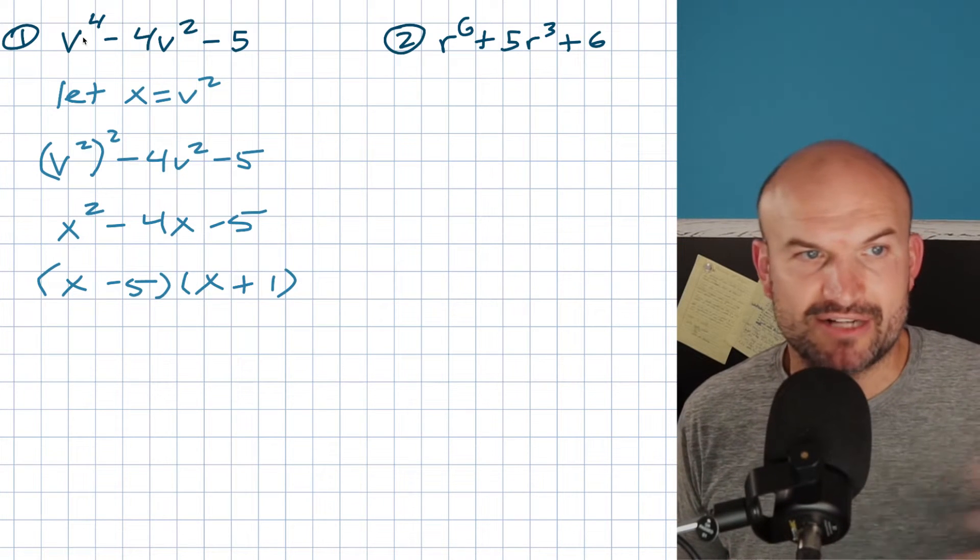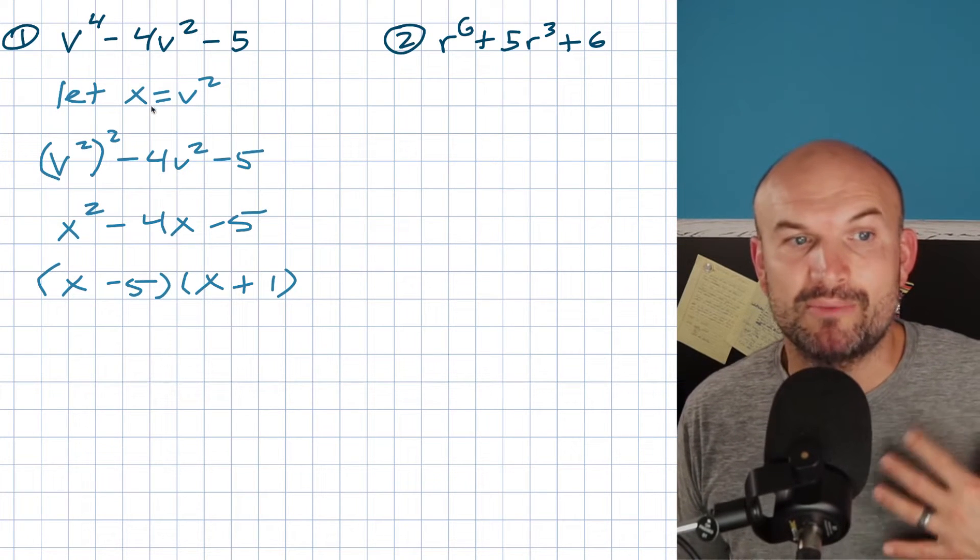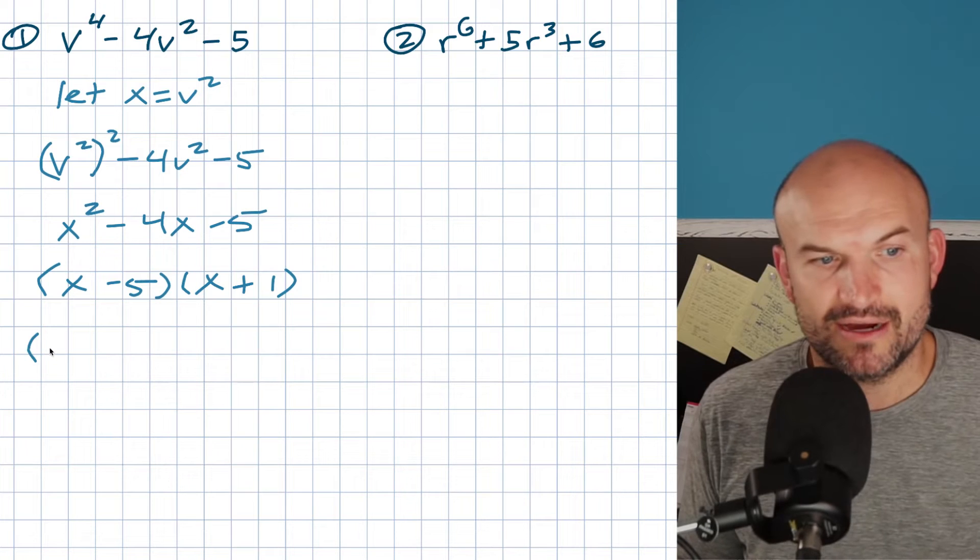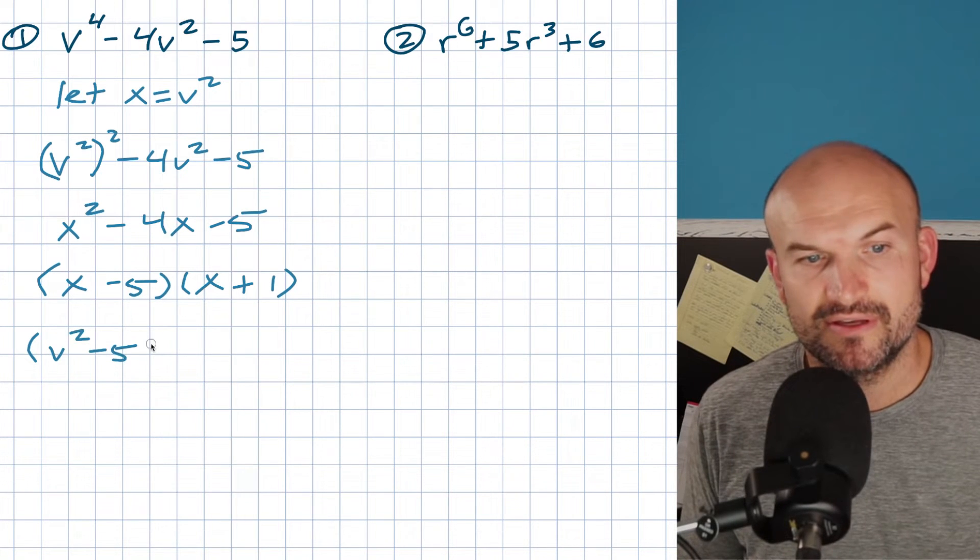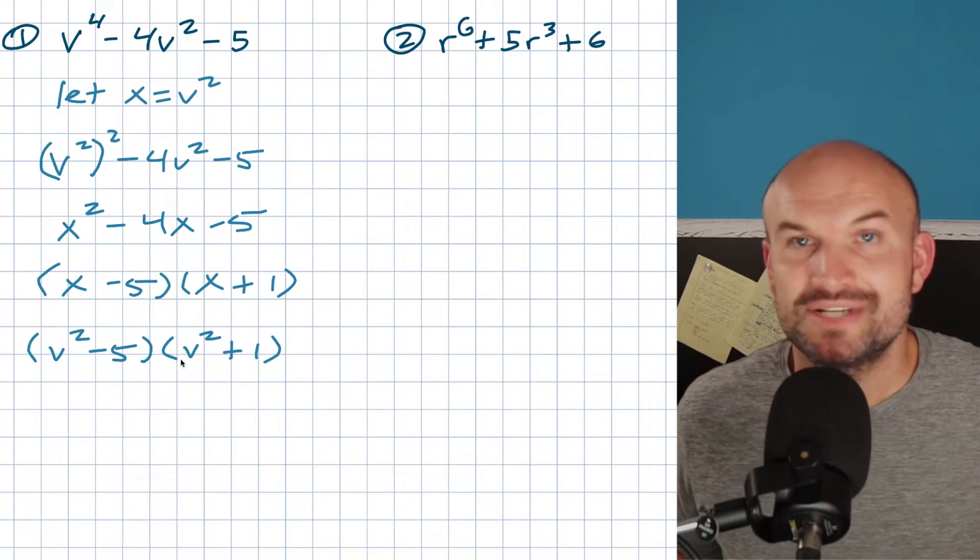Now, remember, we're trying to factor something in terms of v's, right? So what we're going to do now is just go back and replace my x with v squared. So therefore, I can say v squared minus 5 times v squared plus 1, and voila, we're done.